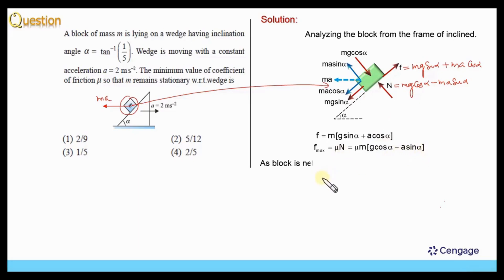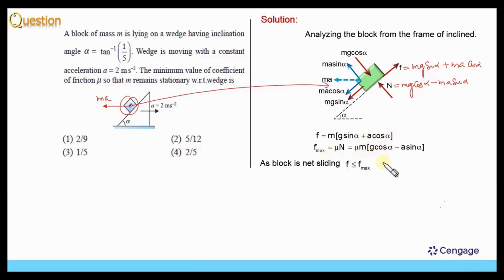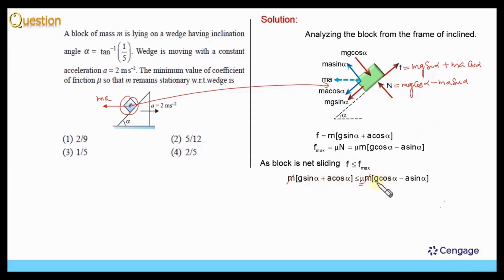We know this block is not sliding. It means the real friction force should be less than or equal to the maximum possible friction force. That means f should be less than or equal to f_max. We know f equals m(g sin alpha plus a cos alpha) and f_max equals mu times m(g cos alpha minus a sin alpha). Here small m cancels out. Now we can get the value of mu: mu is equal to (g sin alpha plus a cos alpha) divided by (g cos alpha minus a sin alpha).